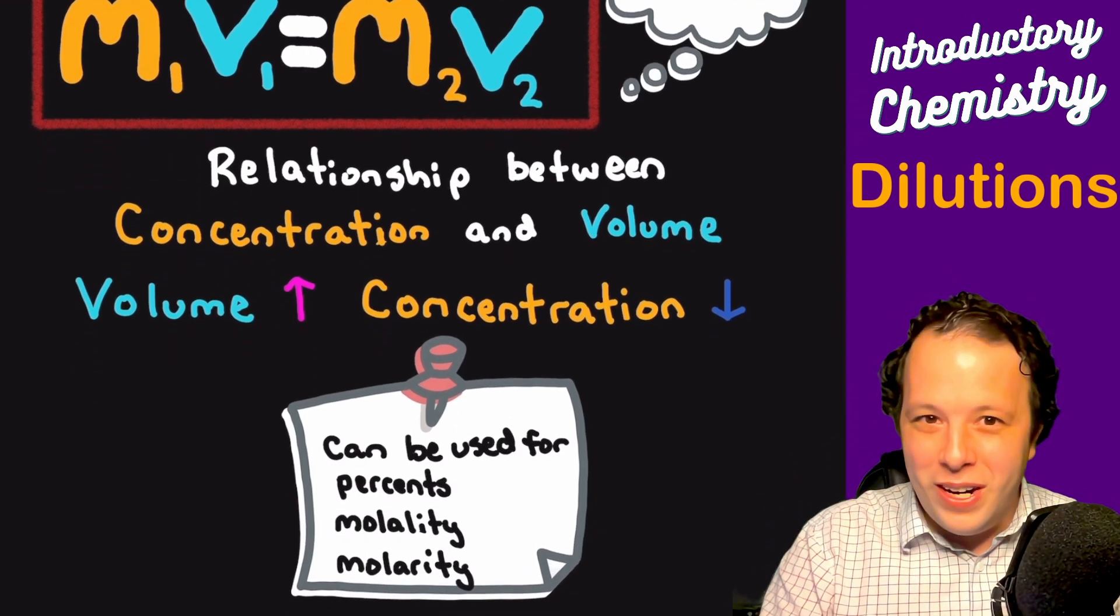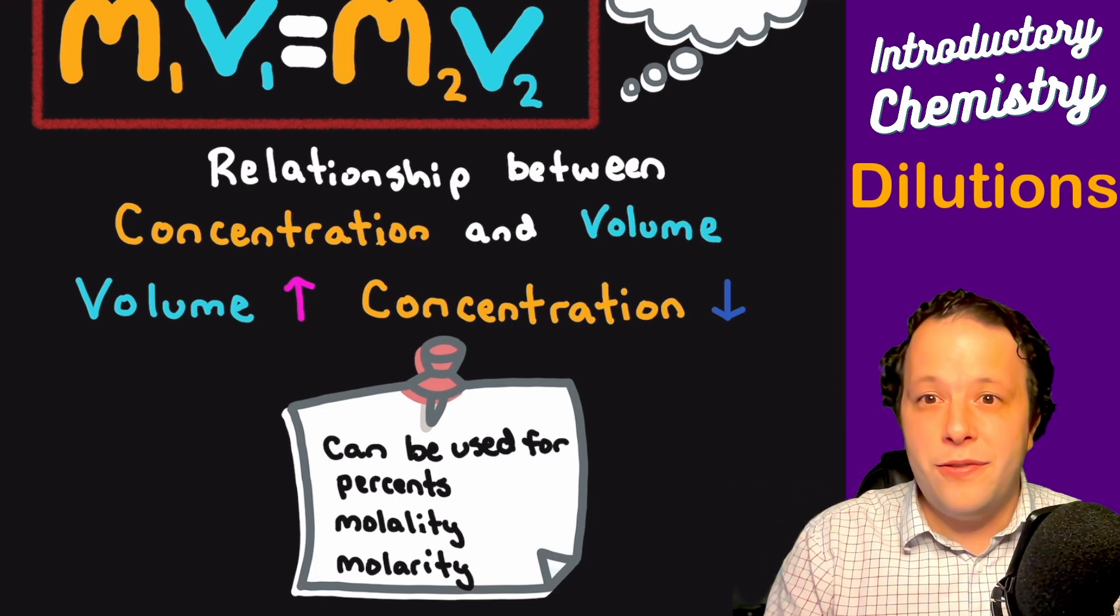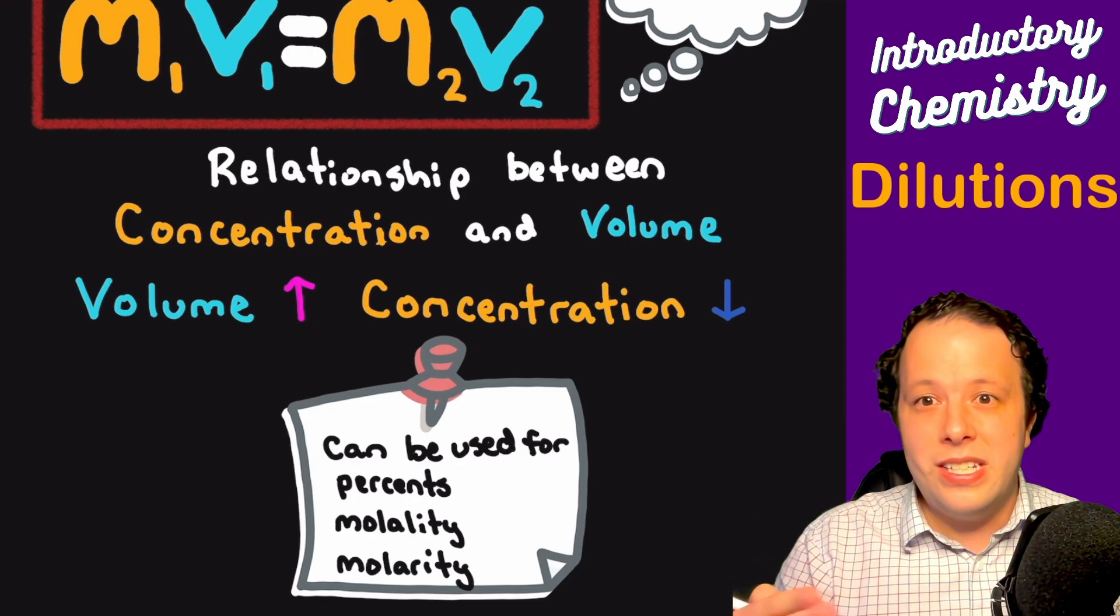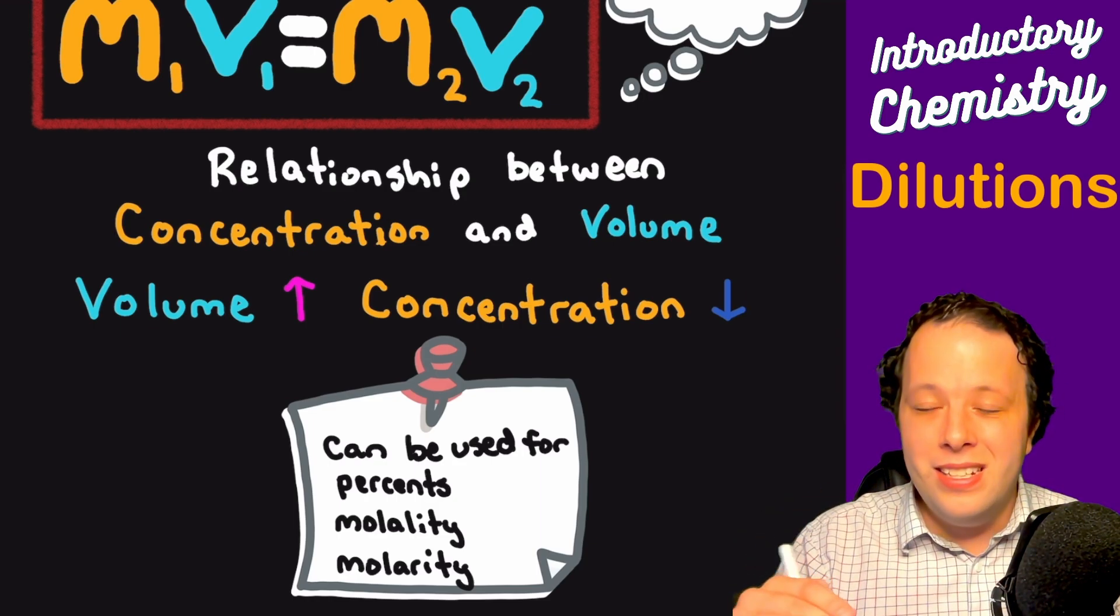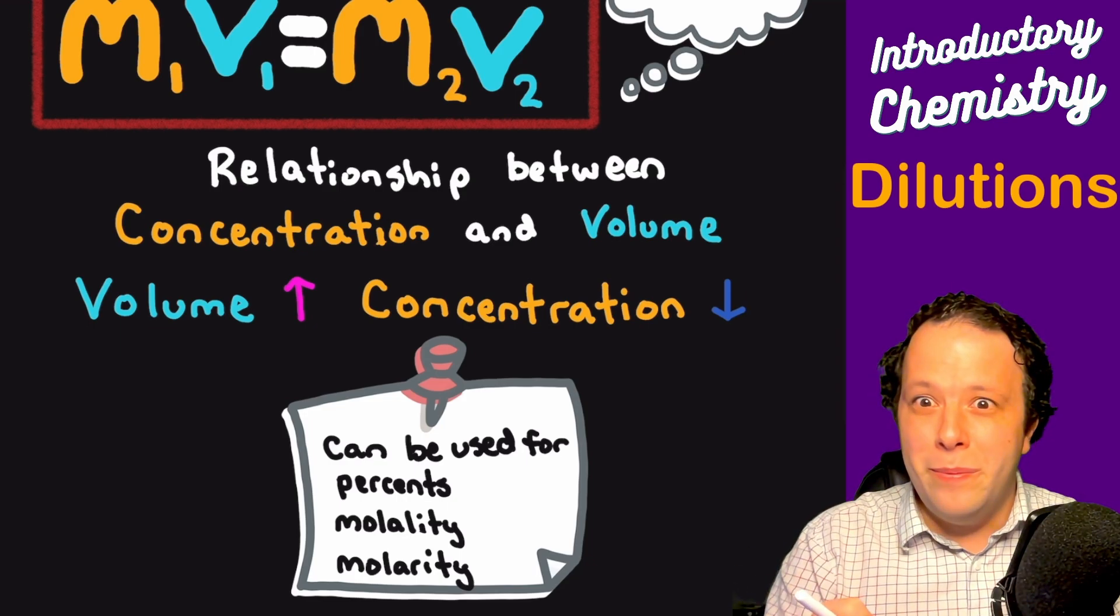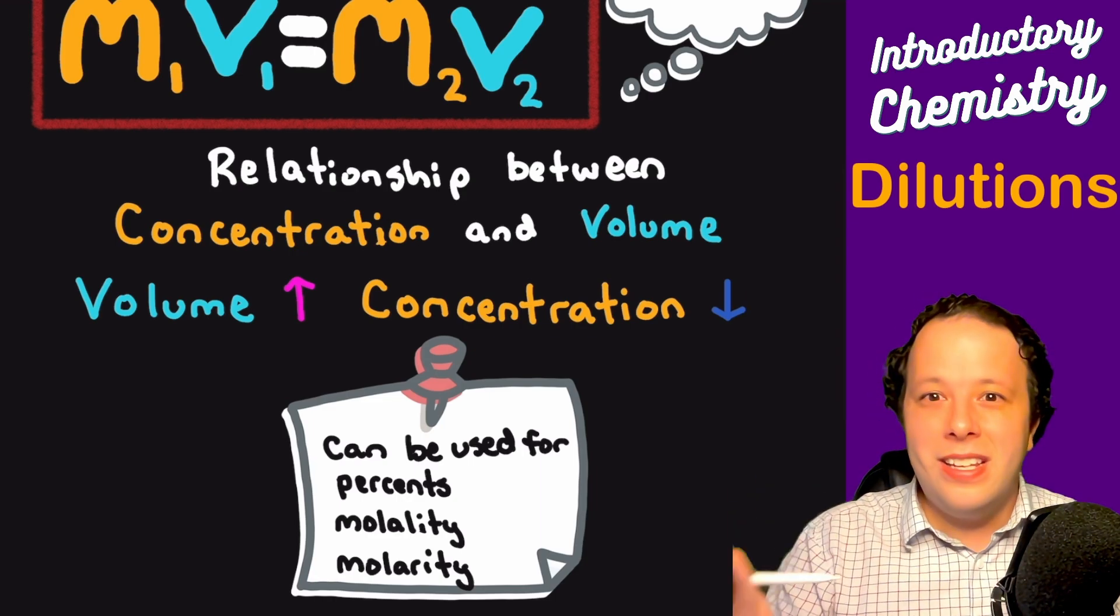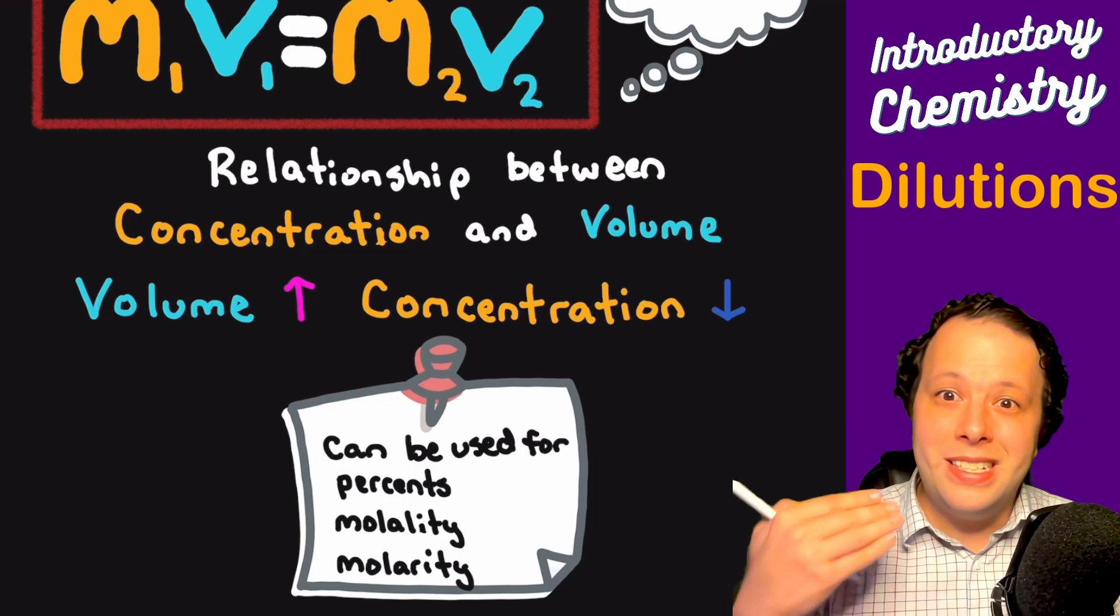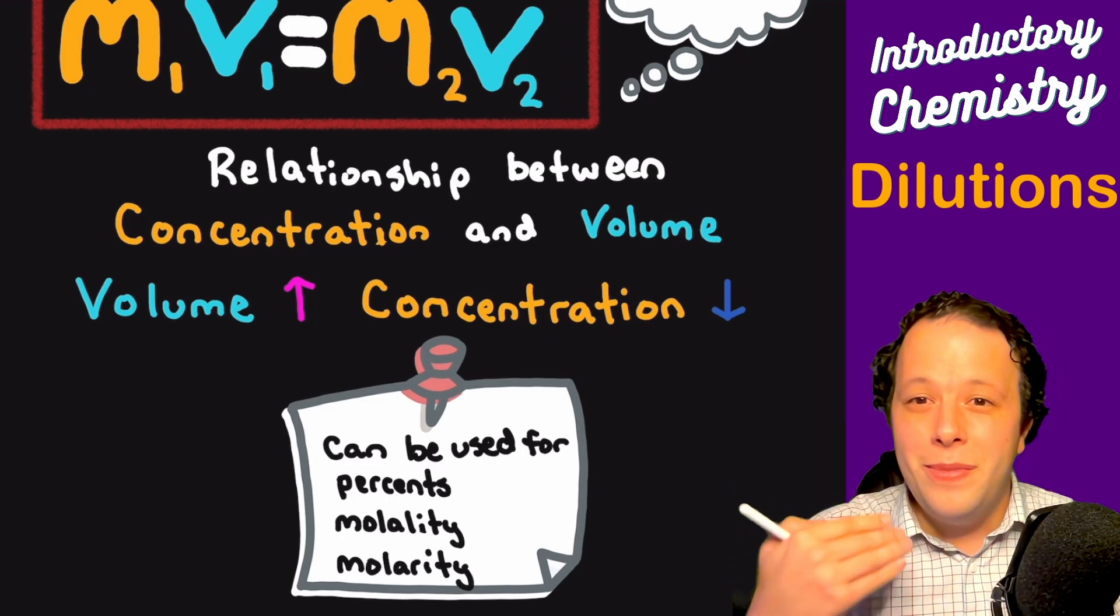This formula can be used for molarity, for percents, for molality. It can be used for any of the concentrations as long as the units are matching on both sides. Meaning molarity has to cancel molarity, millimoles have to cancel millimoles, liters have to cancel liters. Everything needs to match on the left and right.